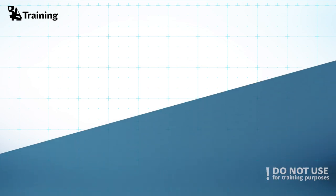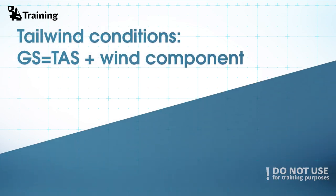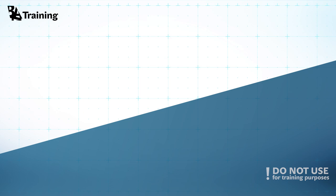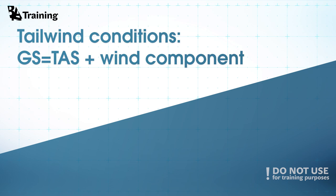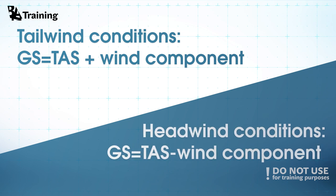Let's summarize the information. In tailwind conditions, ground speed equals true air speed plus wind component. In headwind conditions, ground speed equals true air speed minus wind component.